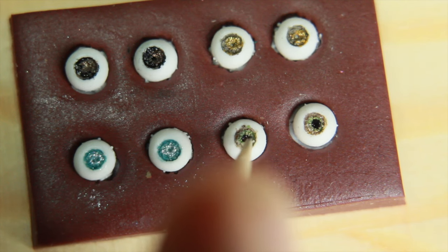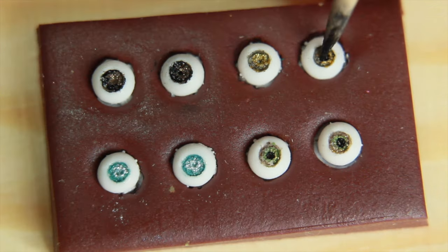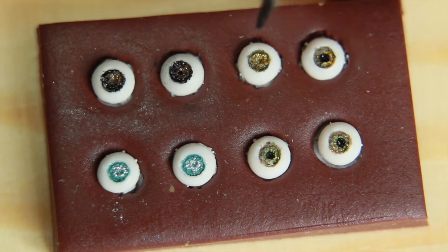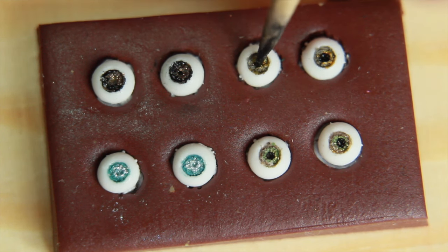For the pupils, you can just paint with black acrylic paint the little hole that is already in the eye texture, or just add them later.